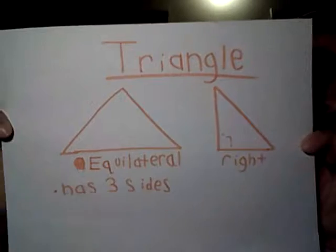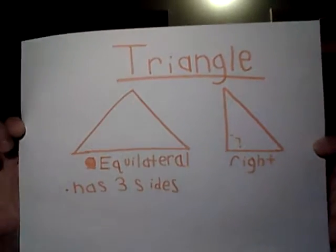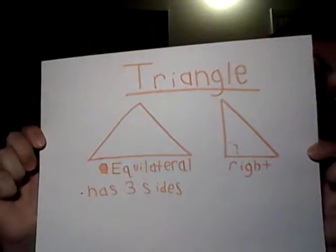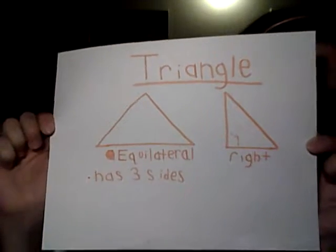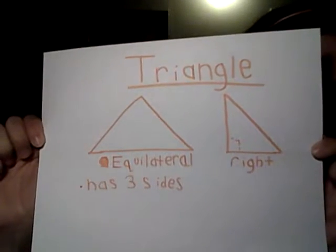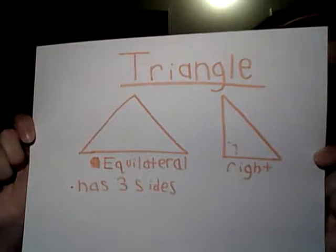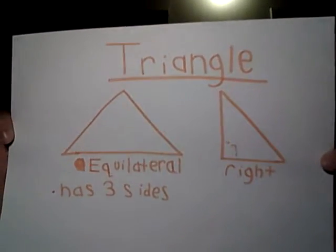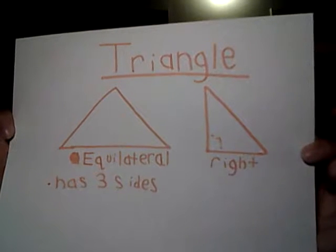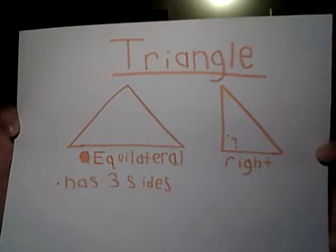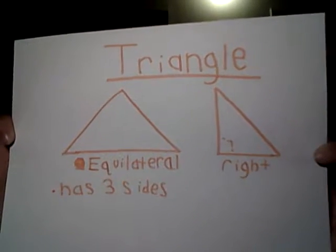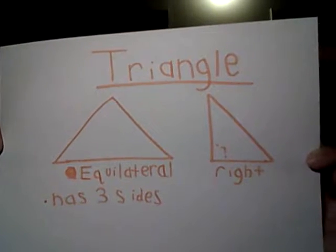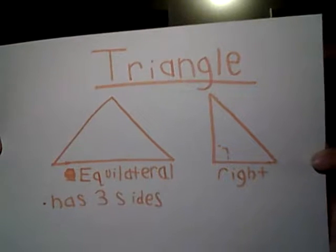As you see here, there are three sides to a triangle, and I've drawn two of many triangles that are out there. If you want to draw on a piece of paper, you want to write triangle, spelled T-R-I-A-N-G-L-E.